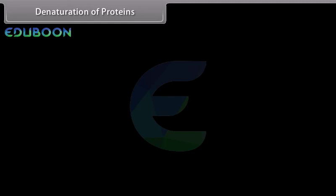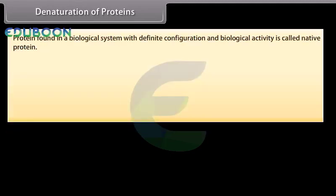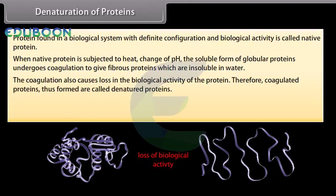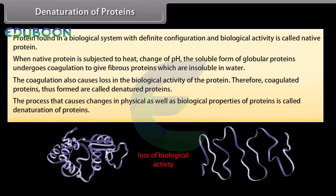Protein found in a biological system with definite configuration and biological activity is called native protein. When native protein is subjected to heat or change of pH, the soluble form of globular proteins undergoes coagulation to give fibrous proteins which are insoluble in water. The coagulation also causes loss in the biological activity of the protein; therefore, coagulated proteins thus formed are called denatured proteins. The process that causes changes in physical as well as biological properties of proteins is called denaturation of proteins. For example, coagulation of egg on boiling and curdling of milk.